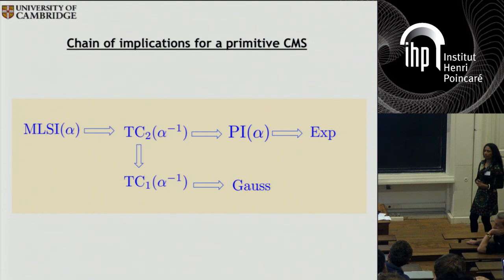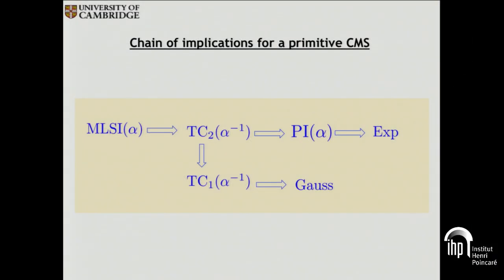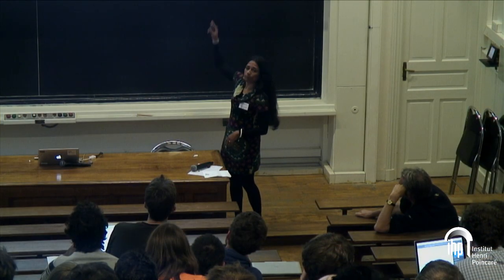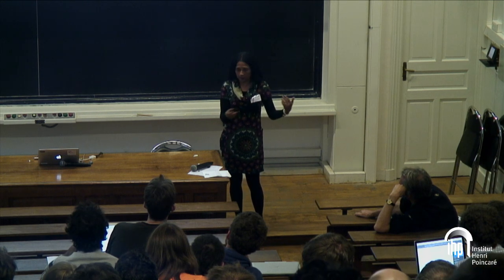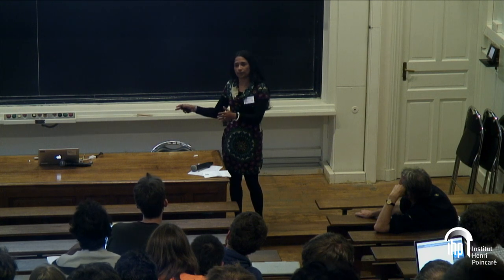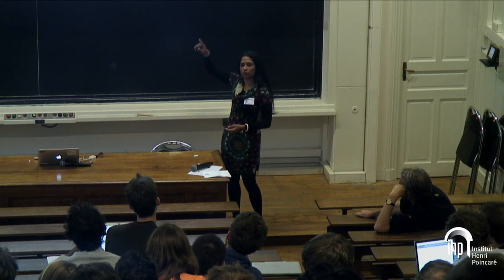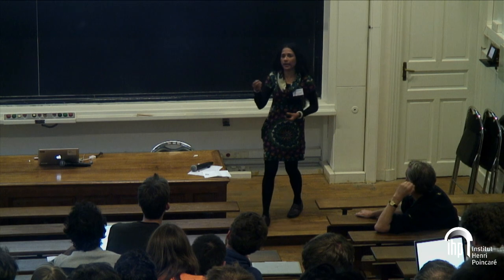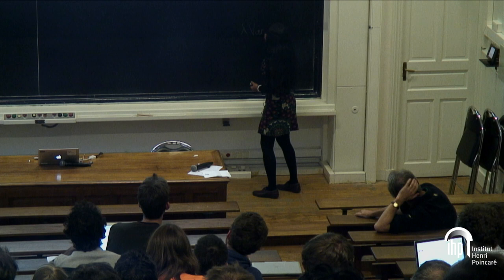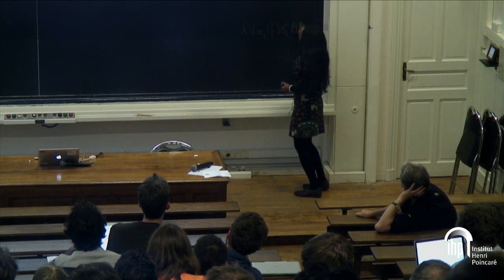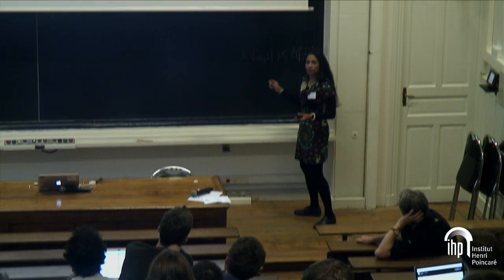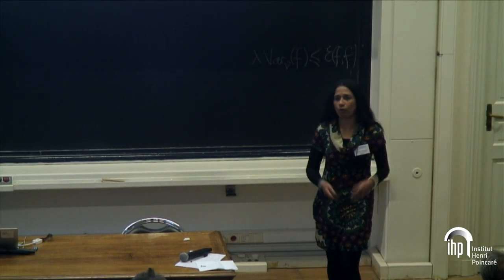An audience question notes that the modified log Sobolev inequality and Poincaré inequality seem to depend on the semigroup while everything else depends only on the stationary measure. In the classical case, even the modified log Sobolev and Poincaré can be defined without reference to any Markov semigroup. However, the speaker states these are presented in this form because in the quantum version the generator genuinely appears in the definition of all those quantities, as will be seen.